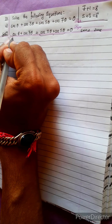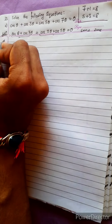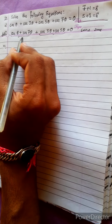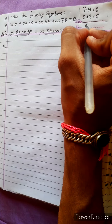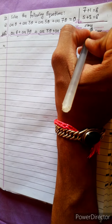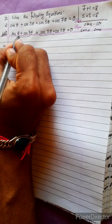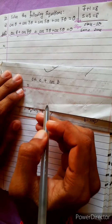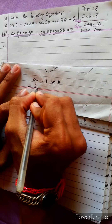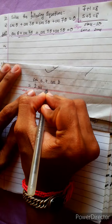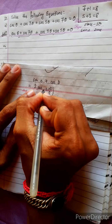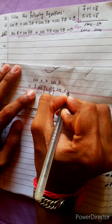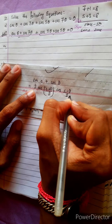Now we use the formula — this is a Class 10 formula. Cos C plus cos D equals 2 cos((C+D)/2) multiplied with cos((C−D)/2).